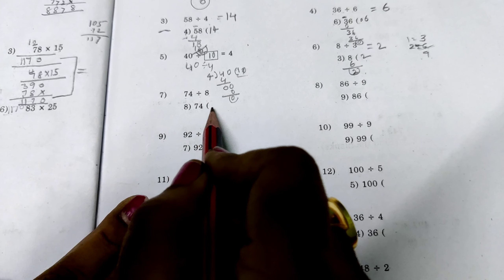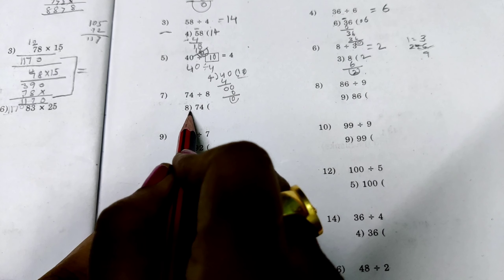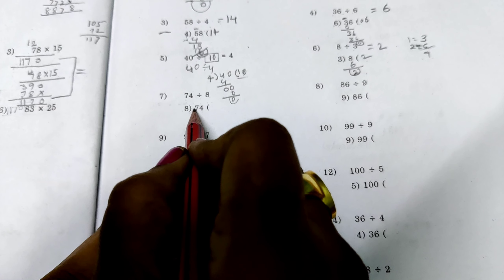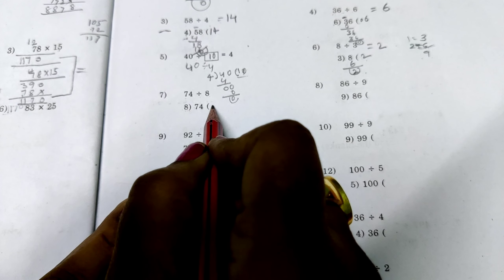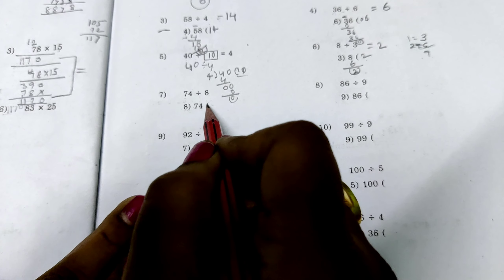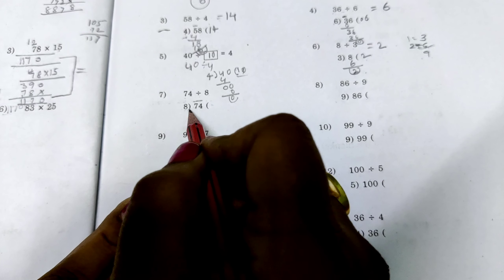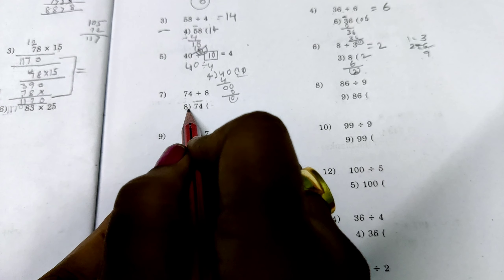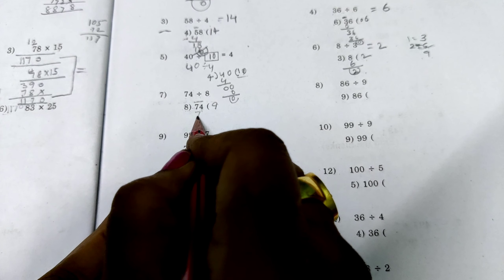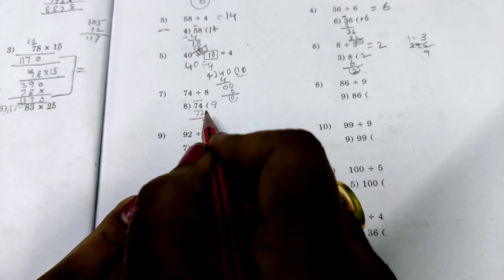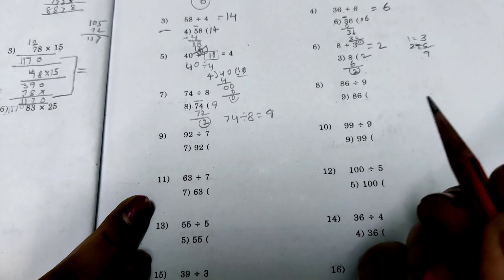74 divided by 8. When we take only 1 digit, that is 7. But 7 is smaller than 8, so we can't subtract. So let us take 2 digits — that is 74. We can do this division with 74 by 8. How many times can we subtract 8 from 74? 8 nines are 72. So we can subtract 9 times. 74 minus 72: 4 minus 2 is 2, 7 minus 7 is 0. Here quotient is 9. Answer is 9. Remainder is 2.